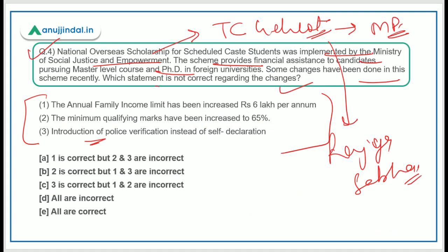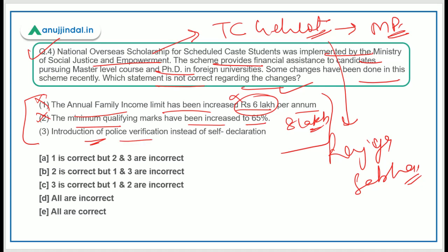Now finding the incorrect statement: 'Annual family income limit increased to Rs. 6 lakh' — incorrect, it was increased to Rs. 8 lakh; 'minimum qualifying marks increased to 65%' — incorrect, it was increased to 60%; 'introduction of police verification instead of self-declaration' — incorrect, self-declaration is the new provision. Therefore the correct answer is Option D: all statements are incorrect.